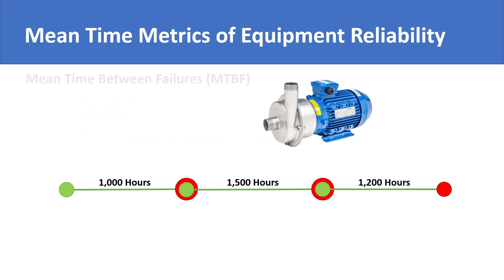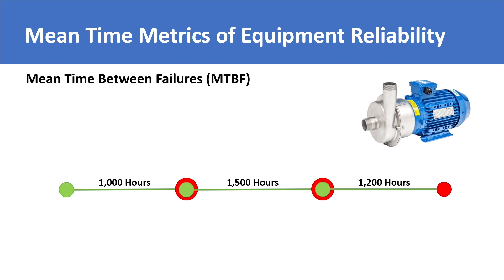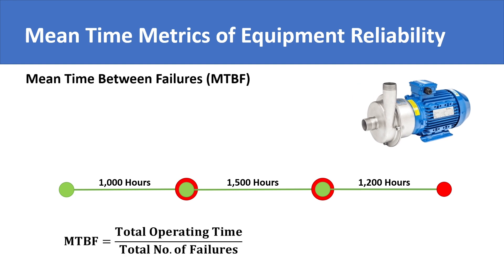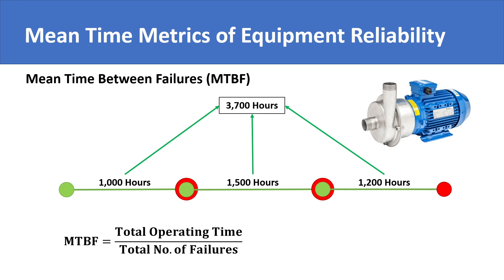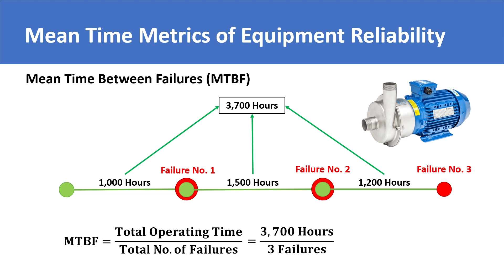The mean time between failures is simply the total operating time divided by the total number of failures. Our total operating time sums up to 3,700 hours and we have a total of three failures. Plugging in the values gives us a mean time between failures of 1,233 hours.